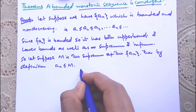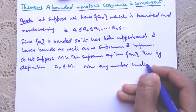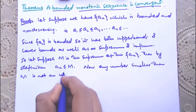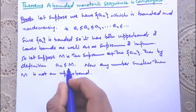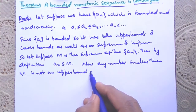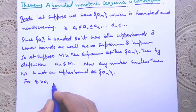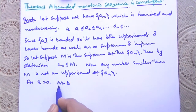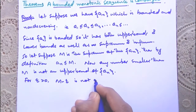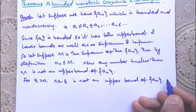Since M is the supremum — the lowest upper bound — any number smaller than M is not an upper bound. Mathematically, for any ε > 0, M − ε is not an upper bound of the sequence a_n. Since M − ε is not an upper bound, there must exist some element a_n in the sequence such that M − ε < a_n.